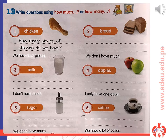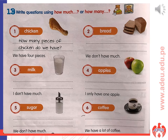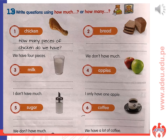Page 54, Exercise 14: Listen and check. 1. How many pieces of chicken do we have? We have 4 pieces. 2. How much bread do we have? We don't have much. 3. How much milk do you have? I don't have much. 4. How many apples do you have? I only have 1 apple. 5. How much sugar do we have? We don't have much. 6. How much coffee do we have? We have a lot of coffee.